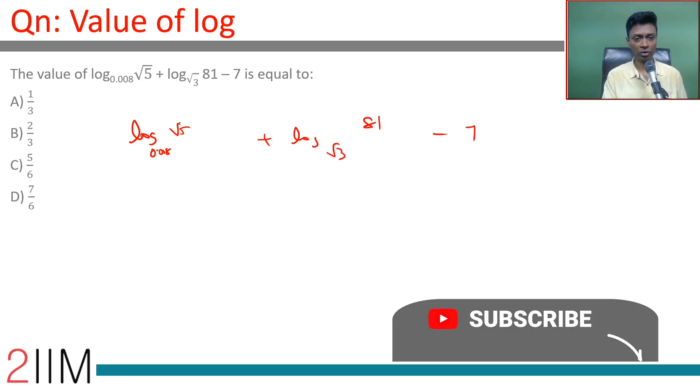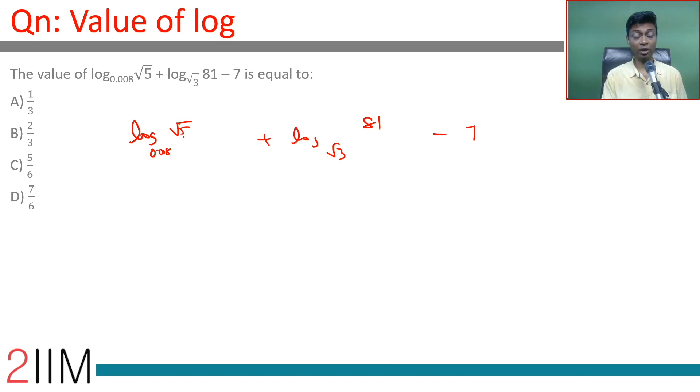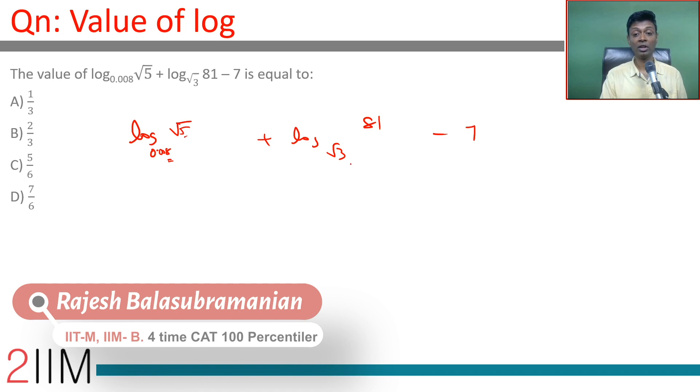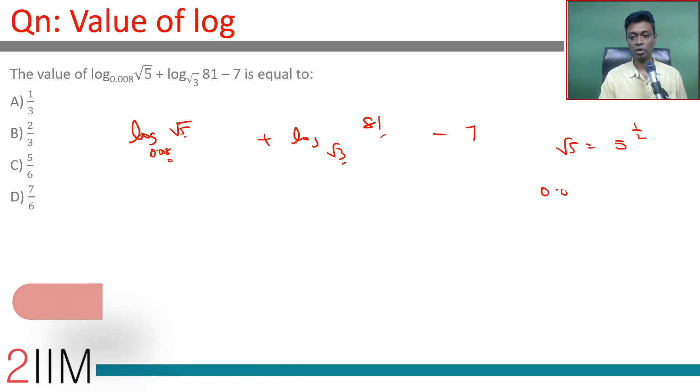What is this equal to? This can be written in terms of 5, these two can be written in terms of 3. Root 5 is 5 power 1 by 2. 0.008 is 2 cube by 10 cube, or this is 5 power minus 3. 1 by 5, 1 by 5 square, 1 by 5 cube, 1 by 125 is this number.